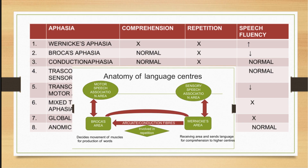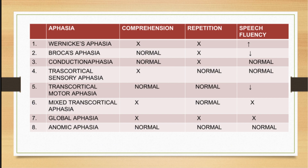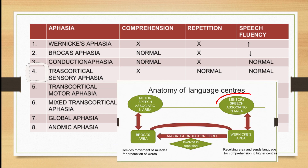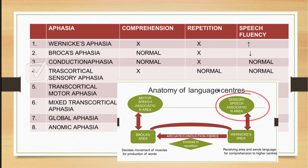In conduction aphasia, comprehension remains normal, repetition is impaired, and speech fluency is normal. In transcortical sensory aphasia, when there is damage to the sensory association areas, comprehension is impaired, repetition is normal, and speech fluency is also normal.